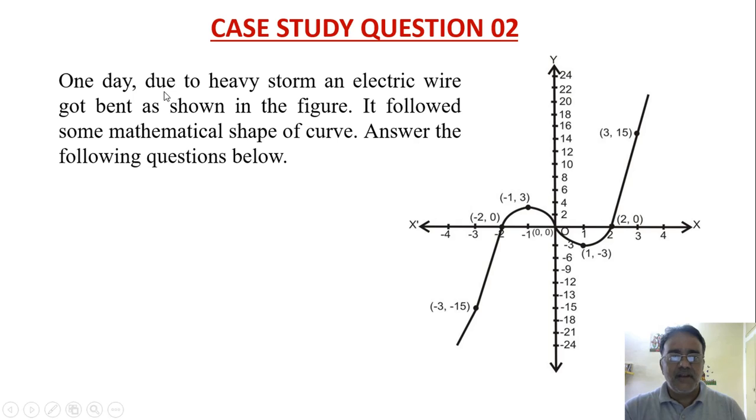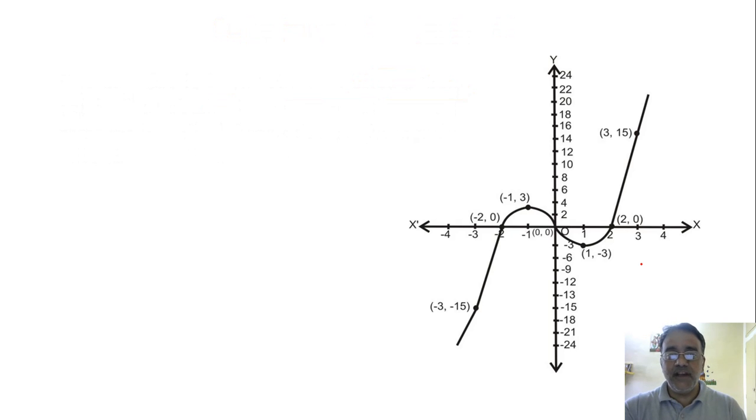One day due to heavy storm, an electric wire got bent as shown in this figure. It followed some mathematical shape of curve. Answer the following questions below. So this is the curve and the picture is given in the Cartesian plane. So now we have to answer the questions.